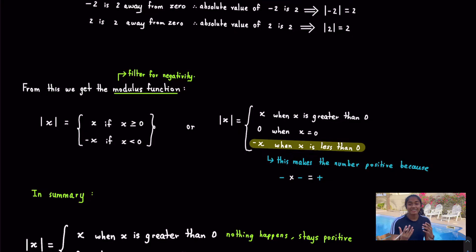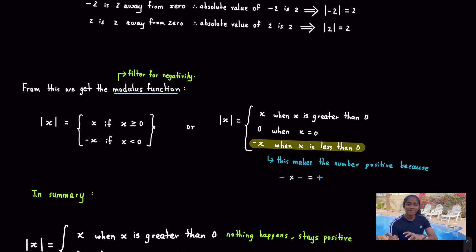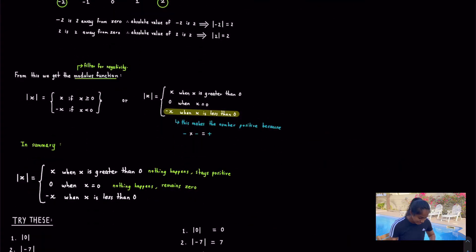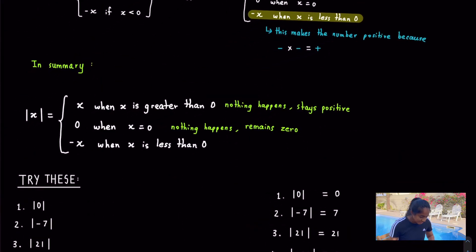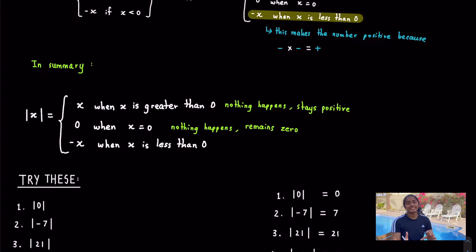It's like a filter for negativity — if something negative goes in, it's removed by the function. The modulus function removes that negativity and makes it positive. In summary: when x is greater than 0, nothing happens, it stays positive. If it is already 0, it stays 0. However, if it is a negative number, we have to make it positive.